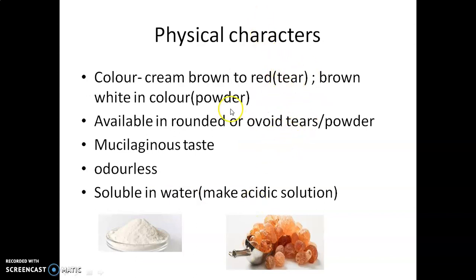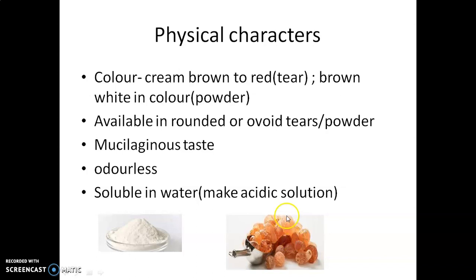Physical characters: the color of the gum is cream, brown, or red in tear form — here you can see the original crude gum in tear form. The powder is brown or white in color. The gum is available in rounded or ovoid tear form. The taste is mucilaginous, it is odorless, and soluble in water. When dissolved in water, the resulting solution is acidic in nature.